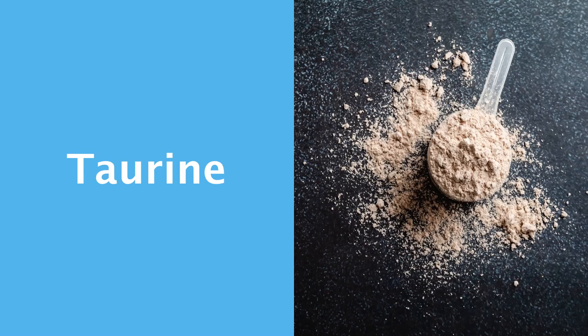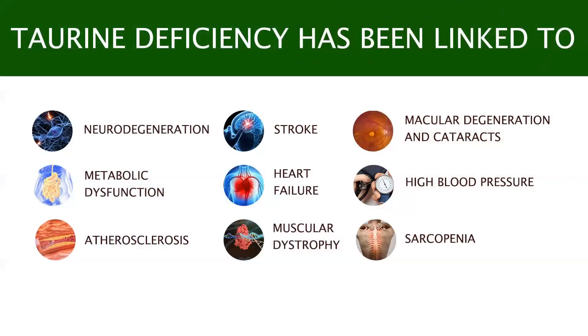Yet there are hundreds of amino acids not involved in protein synthesis at all, many of which we could not live without, and taurine is one of them. Taurine is an omnipresent amino acid within the body, essential for the development and function of our cardiovascular, muscular, nervous, and ocular systems.